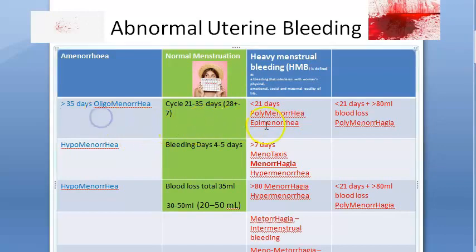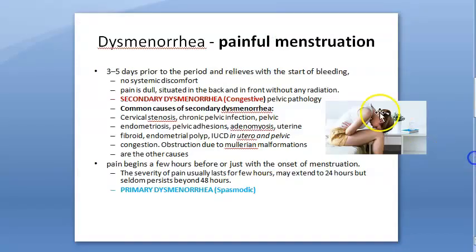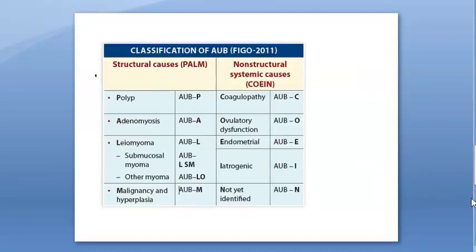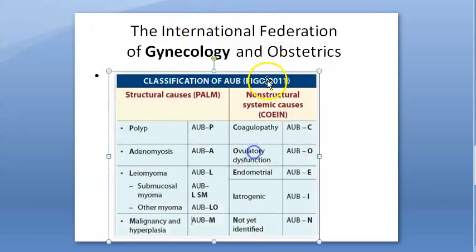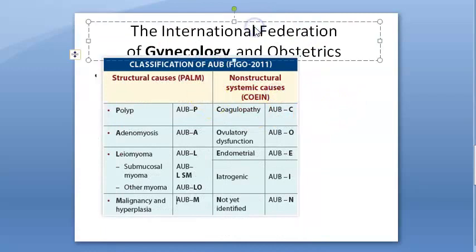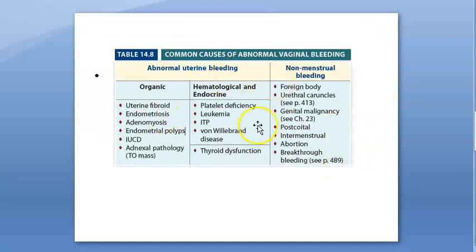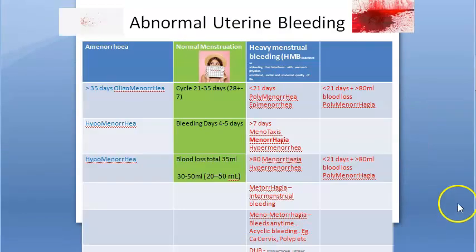In summary, this video covered abnormal uterine bleeding: terminologies such as oligomenorrhea, polymenorrhea, hypomenorrhea, hypermenorrhagia, menorrhagia, polymenorrhagia, dysmenorrhea; causes of abnormal vaginal bleeding; and the PALM-COIN classification — from FIGO, the International Federation of Gynecology and Obstetrics. These structural and non-structural causes are important to know for exams.